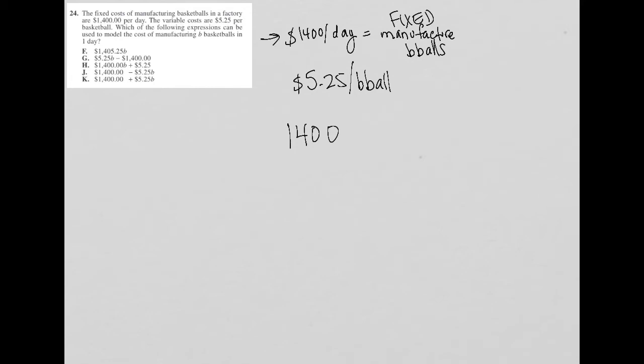So that's what we're going to get. And then on top of that, we know that each basketball is $5.25, but we don't know how many basketballs they're going to produce. We have a variable that represents the number of basketballs that are going to be manufactured. That variable is b.